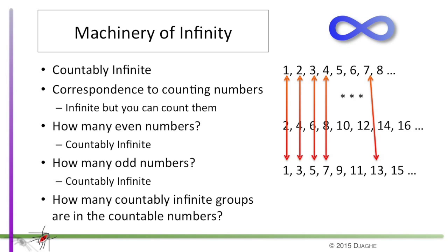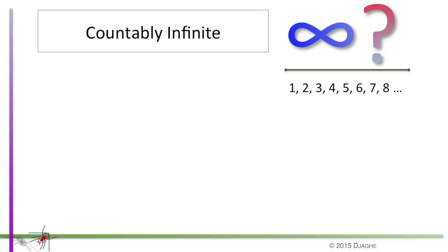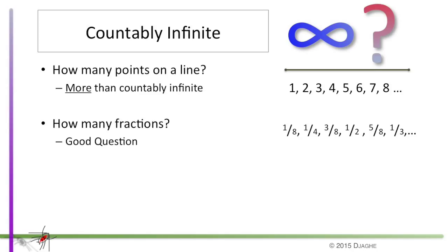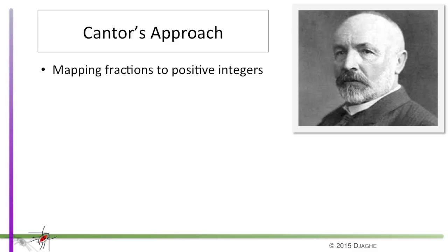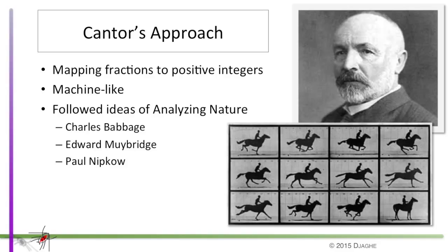And that starts asking questions. If the counting numbers are infinite, and they can be divided into two infinite groups, how many countably infinite groups are there in the countable infinite numbers? Not sure you want to go there, but the answer is countably infinite. Well, from here we go on to other questions. How many points are there on a line? Well, it's more than countably infinite. But how many fractions are there? That's a good question, because at first glance, it could go either way. Cantor went on to look at this question by mapping the fractions to the positive integers, and he looked for a machine-like process, something that would mechanically connect those integers to the fractions. And he followed ideas that others were thinking about during the 19th century, the ideas of Charles Babbage, Edward Muybridge, the guy who looked at animal movements and tried to break them apart, as you see in the screen, or in particular, Paul Nipkow.